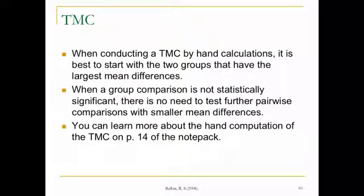So if you ever have to do this by hand, it's always best to start with the two largest mean differences, the groups with the largest mean differences, and then work your way down to the smaller mean differences. When a group comparison is not statistically significant with one group, there's no reason to test a smaller group because it's all about the magnitude of the difference between the means. So if you're interested in learning more about the hand computation, you can look at that in the note pack on page 14.